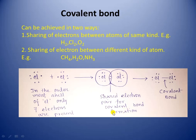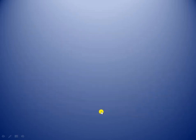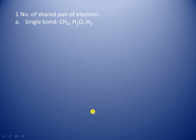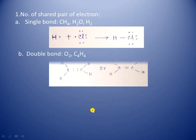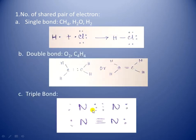On the basis of number of shared pairs of electrons, covalent bonds can be categorized into three types: single bond, double bond, and triple bond. We find single bonds in methane (CH₄), water (H₂O), and hydrogen gas (H₂).